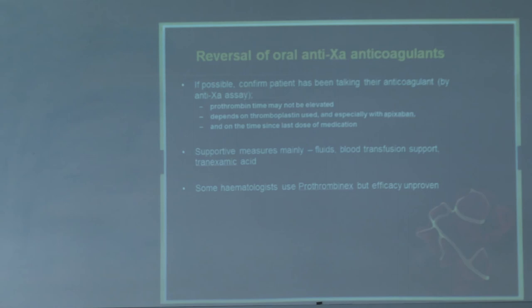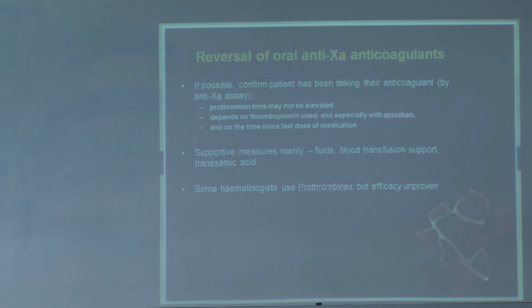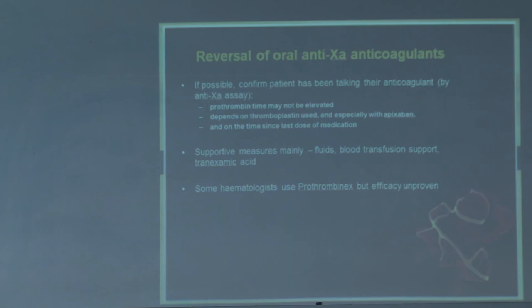How do you reverse anti-Factor Xa agents? We don't have a specific reversal agent, so we use supportive measures: fluids, blood transfusion, tranexamic acid. Some haematologists recommend prothrombin complex concentrate, but it's unproven — I would just recommend supportive measures. For heparin, you can reverse it with protamine, and you can reverse approximately one-third of the low molecular weight heparin effect with protamine, but protamine is not effective for oral Factor Xa inhibitors.